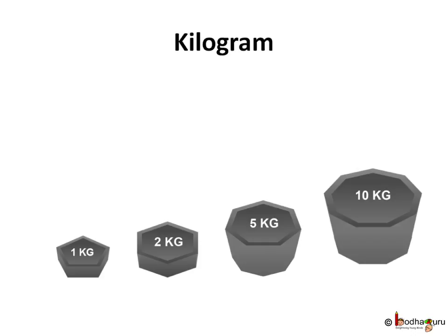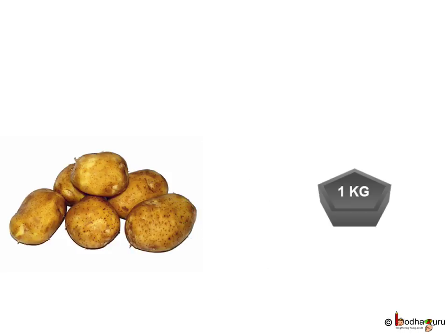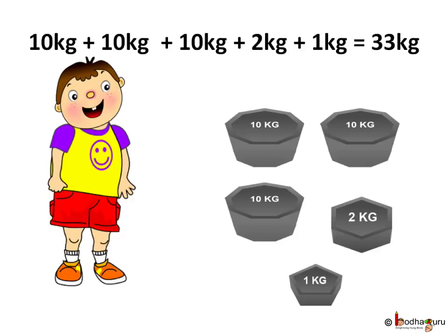The unit of weight is kilogram. We see vendors using metal weights to measure the weight of other objects. There are metal weights of 1 kg, 2 kg, 5 kg, 10 kg, etc. You can easily lift 1 kg, like 1 kg of potato or onion. So if your weight is 33 kg, that is 3 ten-kg weights plus 1 two-kg weight plus 1 one-kg weight, which equals 33 kg in total.